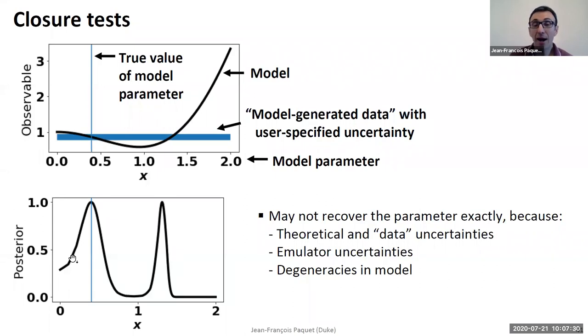You can also have, and this is somewhat of an extreme example, but you may have some degeneracy in your models. It's possible that a single value of your observable can give you multiple values for the parameters. So if you have a degeneracy, your closure test can show you that you have this kind of issue.